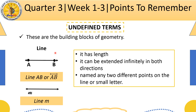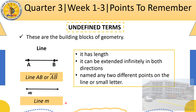The second undefined term is the line. A line has length and can be extended infinitely in both directions. In the illustration, it has two arrowheads indicating it extends in both directions. We can name a line using two different points on it — for example, with points A and B, we call it line AB. Another way is using a small letter, such as line M. Lines can be found on the road.